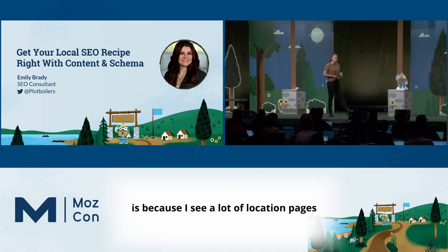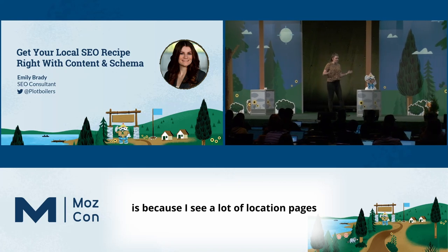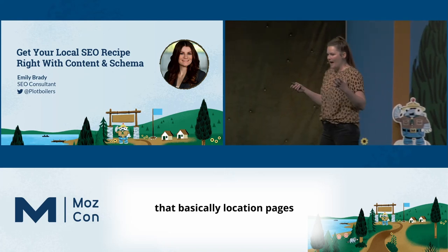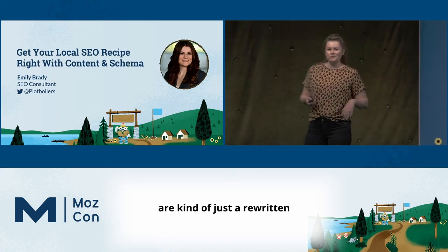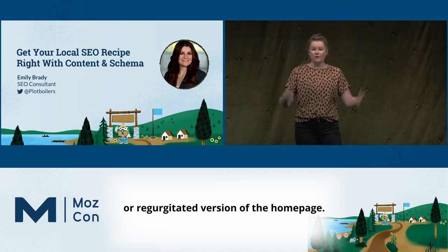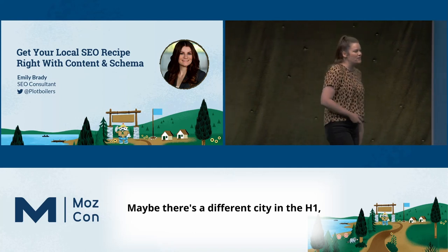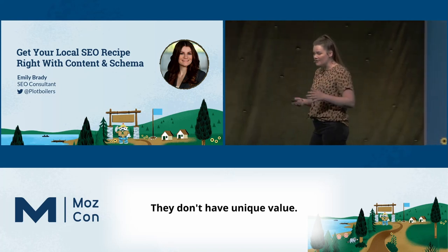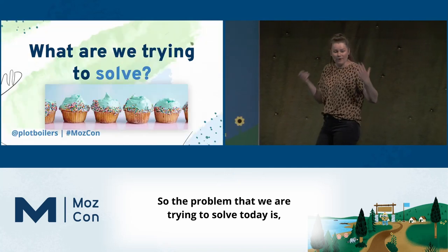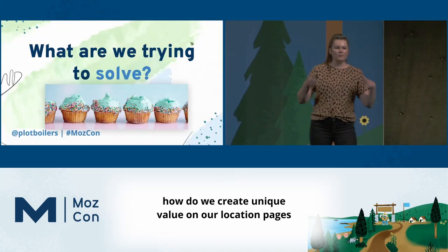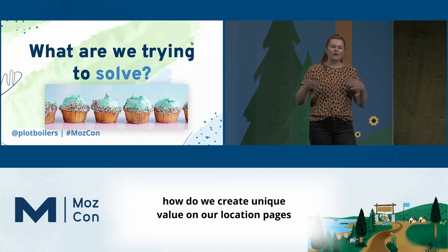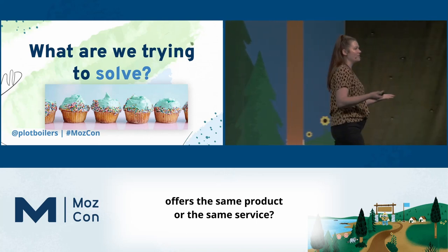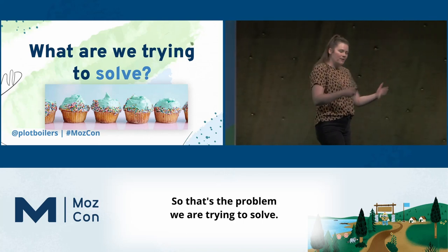The reason I chose this topic is because I see a lot of location pages for small businesses with just a few locations, all the way up to bigger brands, where location pages are basically just a rewritten or regurgitated version of the homepage. Maybe there's a different city in the H1 and a different address in the footer, but they're all saying the same thing — they don't have unique value. So the problem we are trying to solve today is how do we create unique value on our location pages when every location does the same thing and offers the same product or service.